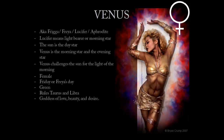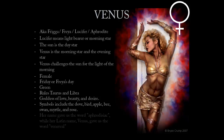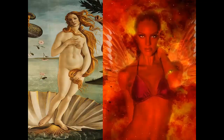Venus's symbols include the dove, the apple, the bee, the swan, the myrtle, and the rose — symbols you'll see used by companies in their logos as well. Her name gives us the word 'aphrodisiac,' while her Latin name Venus gives us the word 'venereal,' which is about passion and sex. Lucifer is only mentioned once in the King James Bible as the morning star, while Jesus is the day star — you can see how they have that conflict first thing in the morning.